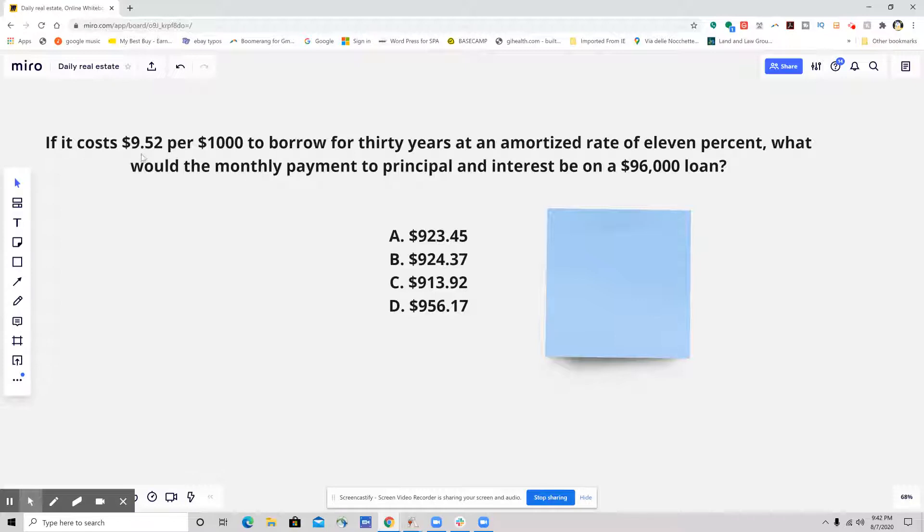If it costs $9.52 per $1,000 to borrow for 30 years at an amortized rate of 11%, what would the monthly payment to the principal and interest be on a $96,000 loan?